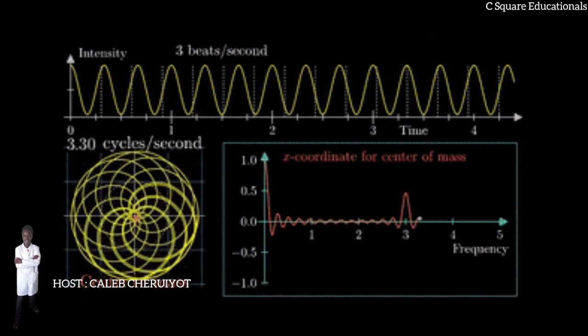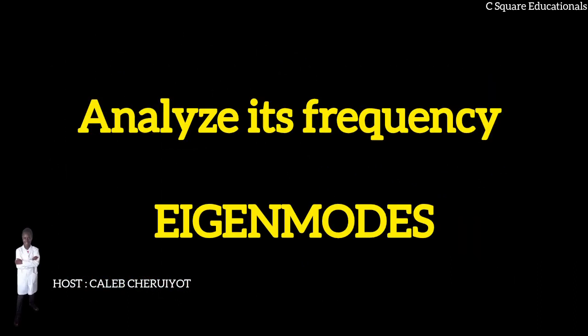Another way to solve the one-dimensional wave equation is to first analyze its frequency eigenmodes. A so-called eigenmode is a solution that oscillates in time with a well-defined constant angular frequency ω, so that the temporal part of the wave function takes the form.